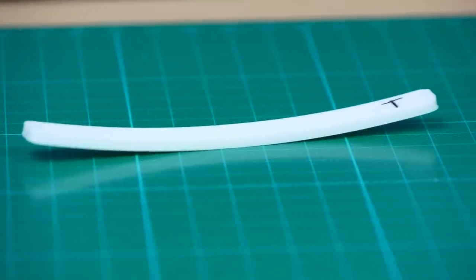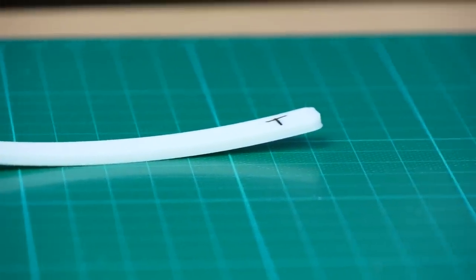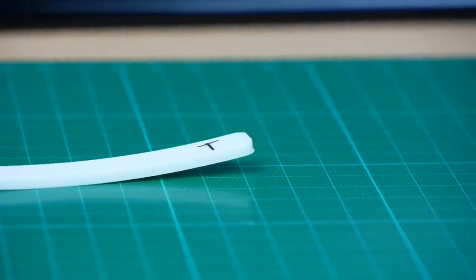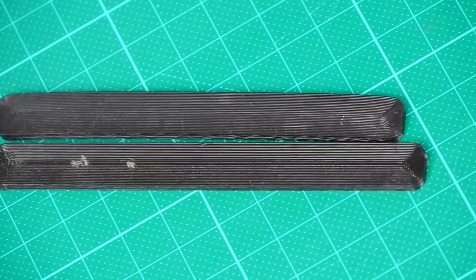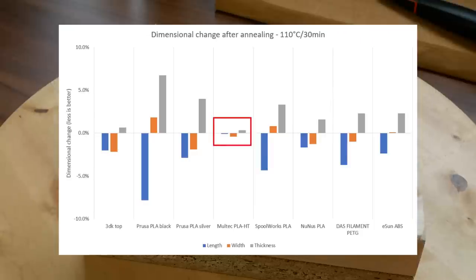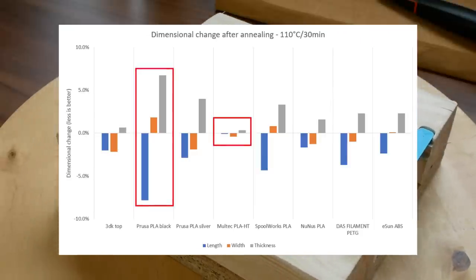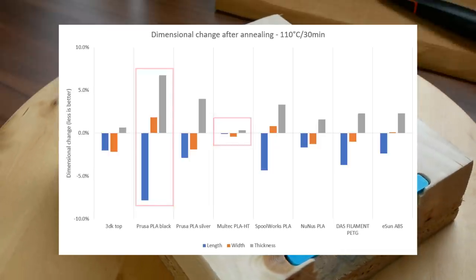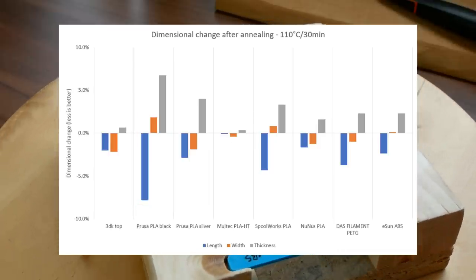Let's take a look at our annealed specimens at first, because some of them changed their shape quite a bit. All of the specimens shrunk in length from a negligible 0.2% for the high temperature PLA to almost 8% for the black PLA. They also shrunk in width and grew a little bit in their thickness.